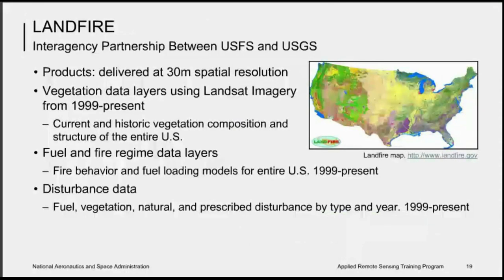Land Fire is a joint U.S. Forest Service and U.S. Geological Survey program designed to improve fire and natural resource management. It provides a national inventory of geospatial data including vegetation composition and structure, fire behavior and effects, fuel loading models, and fire regime conditions for the entire United States from 2006 to present. Multiple data products are organized into groups including disturbance, vegetation, fuel, fire regime, and topographic data. Products are delivered at 30-meter spatial resolution and updated every two years to reflect changes in landscapes over time.